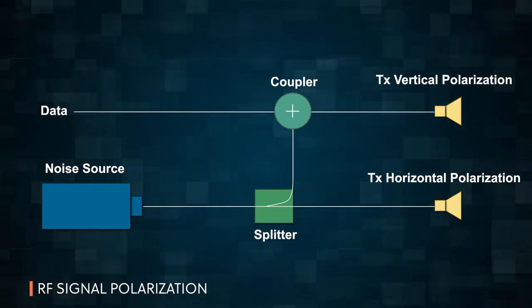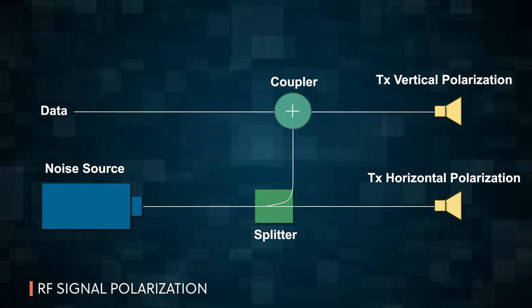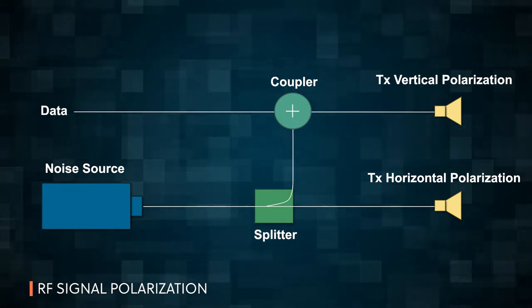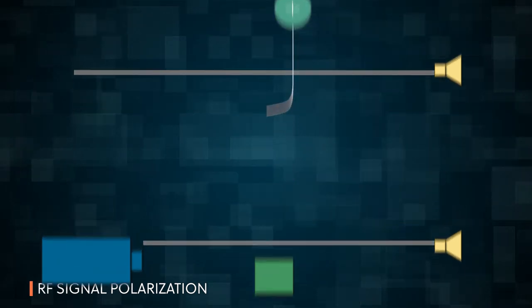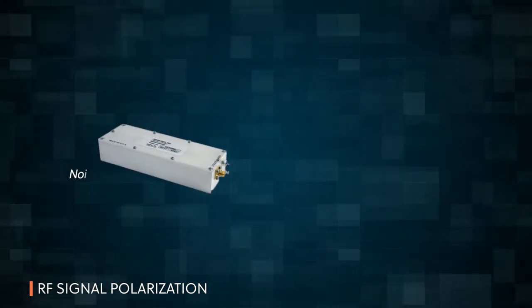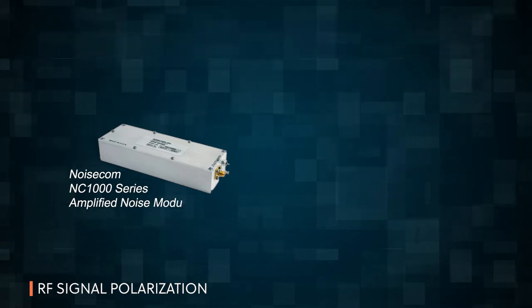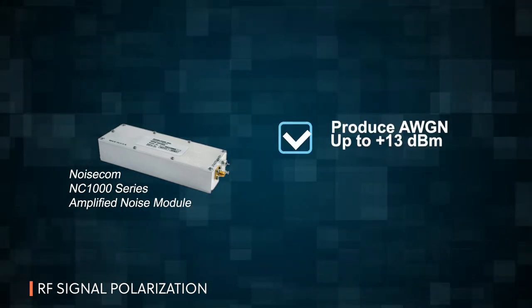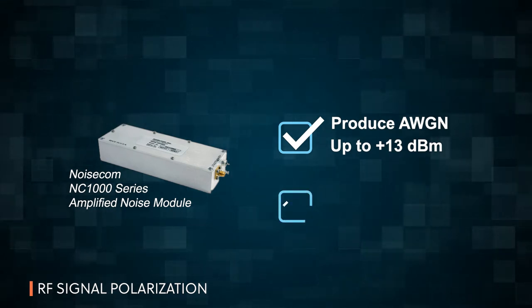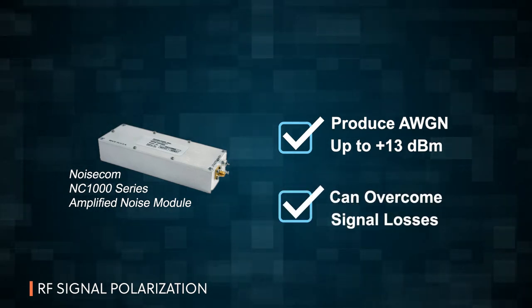The receiver will combine both polarizations to cancel out the noise and reveal the data. The noise source needs high output power, such as the NOISECOM NC-1000 series amplified noise modules that produce AWGN as high as plus 13 dBm, to overcome inherent signal losses after transmission.